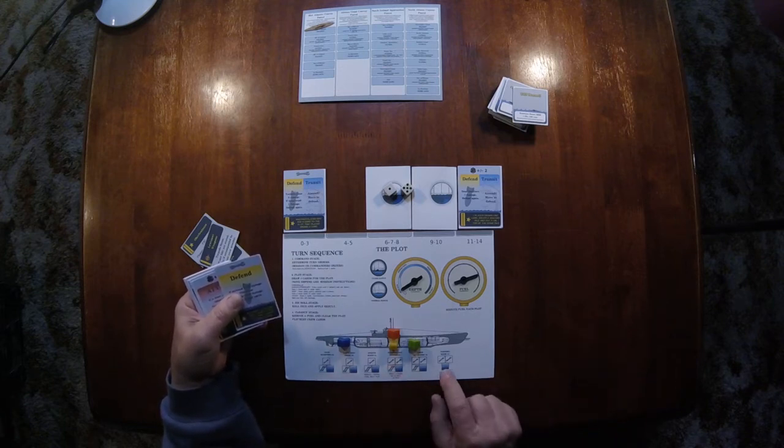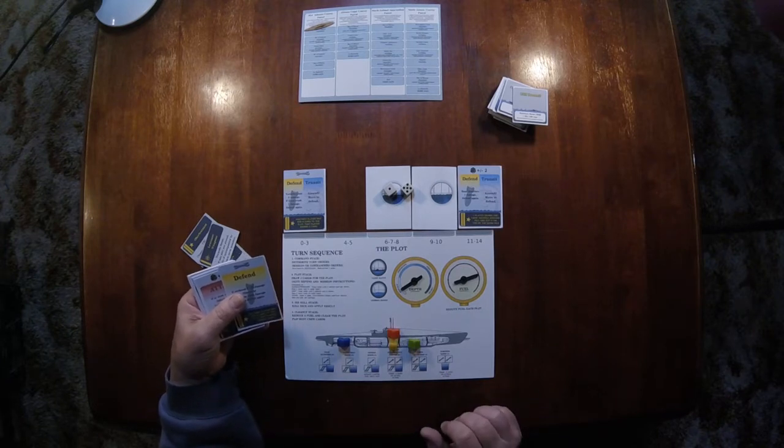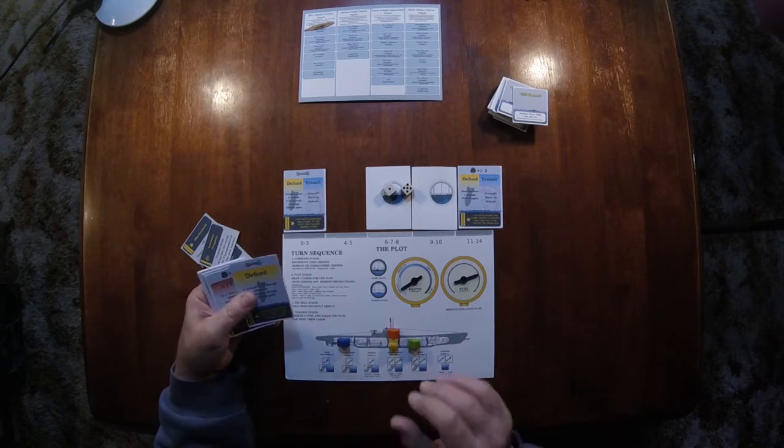Once a section of the sub is flooded, people can't move through it, obviously. Two flooded sections, I think. I should have read the rules before I sat down and did this, but I think two flooded sections and the boat is lost. So that's basically how the game works.